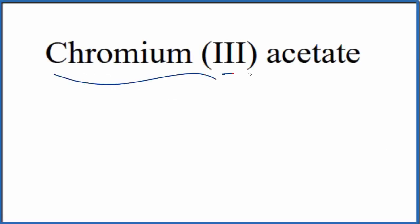To write the formula for chromium-3-acetate, let's first write the element symbol for chromium. That's just C-R.